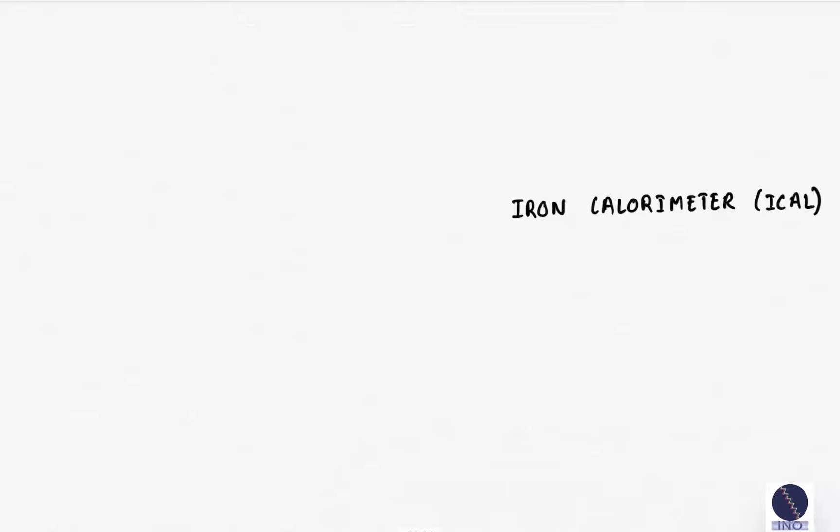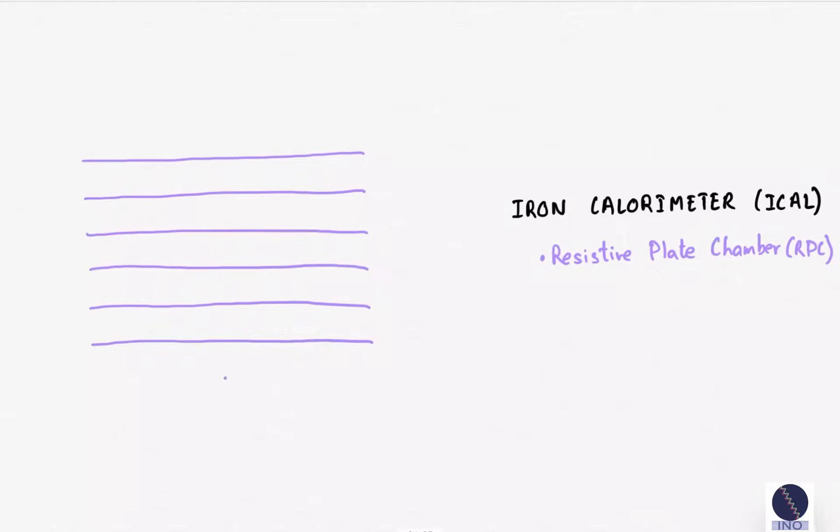The active particle detector used in ICAL is called resistive plate chambers or RPCs. RPCs can detect charged particles. ICAL will contain vertically stacked layers of RPCs. The separation between two layers is 9.6 cm.